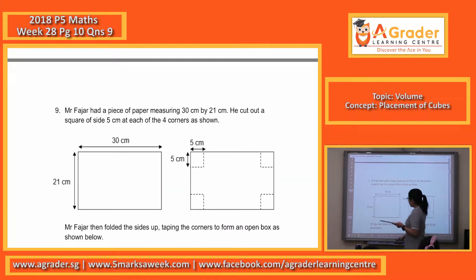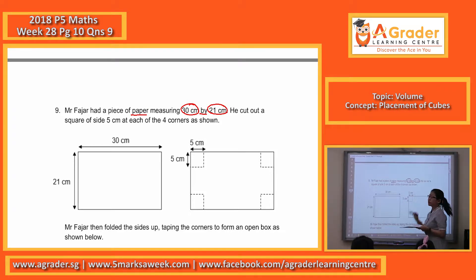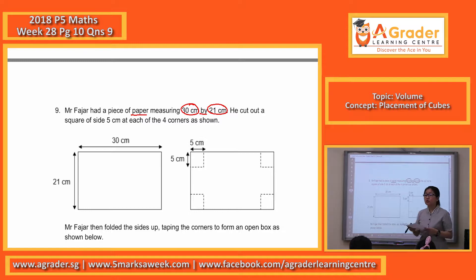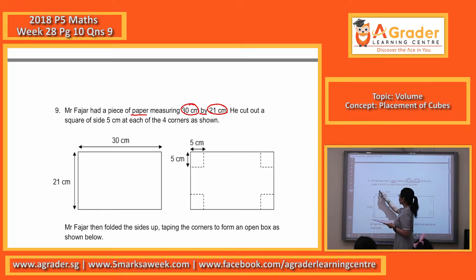Mr. Fajok had a piece of paper measuring 30cm by 21cm. Remember, paper — we only have length and breadth. This is the length, and this is the breadth.